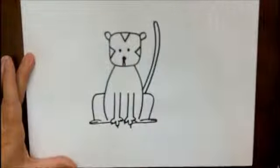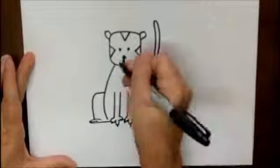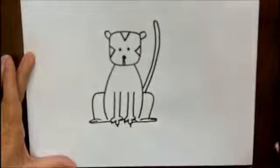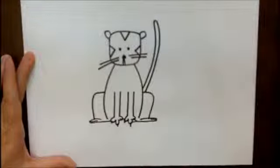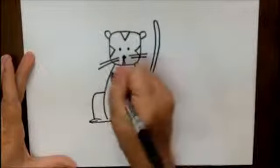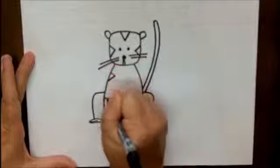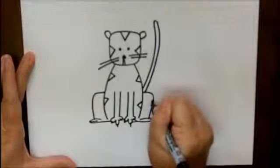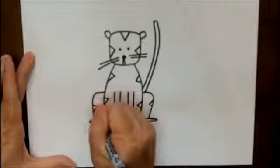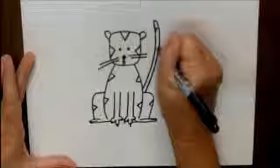And then two lines for his mouth. You can curve them up if you'd like him to be a happy tiger. Some little whiskers. And then we'll move down to his body and put some more stripes. And this is just a few v's to the side on his back legs, even on his tail.